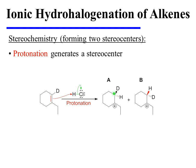As we do this, however, we generate a stereocenter, because hydrogen and deuterium can be distinguished. Since the alkene has trigonal planar geometry and both of its carbons are flat, the proton may be added from below or from above, to generate both carbocations A and B, which are stereoisomers of one another.